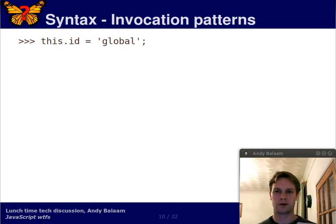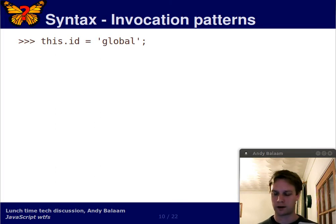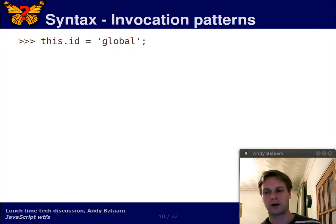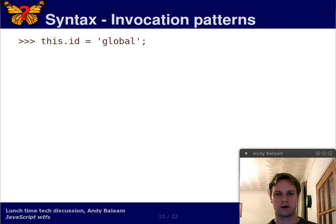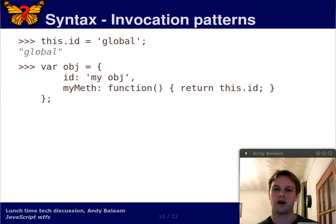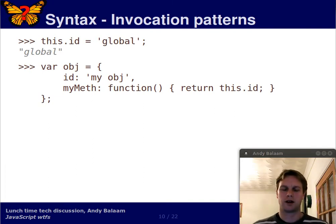Another aspect of JavaScript syntax which might be surprising is something sometimes called invocation patterns. Let's set up an example. We're in the global scope here, but there's always something in JavaScript called this. If you're in the global scope, this is the global object — your browser window or something like that. Let's set a property on this — let's set the ID property to 'global'. Now let's make an object. One way in JavaScript to make an object: you have a curly bracket, then name-colon-value pairs separated by commas until a closing curly bracket. This is an object with a property called ID which is a function itself.